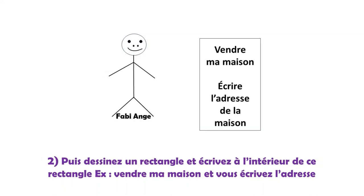Deuxième étape. Je dessine un rectangle à droite et j'écris le titre de la situation à l'intérieur du rectangle. Ici, j'ai pris comme exemple « Je vends ma maison » et j'inscris l'adresse.